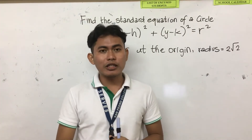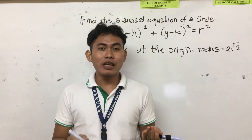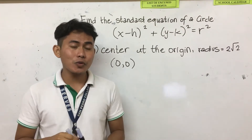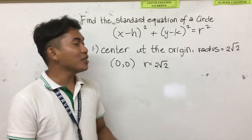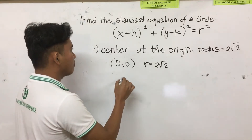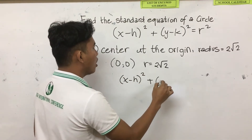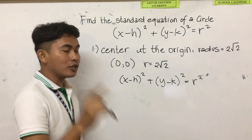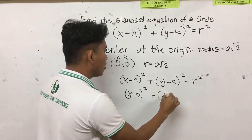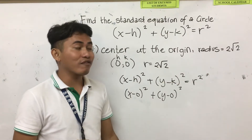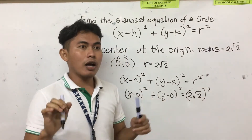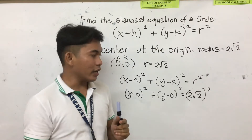When we say the center is located at the origin, what is the coordinate? Of course, the coordinate of the center at the origin is (0, 0). Then our radius is 2 square root of 2, so r is equal to 2 square root of 2. After this, you are going to substitute these values into the standard equation. So you have x minus h squared plus y minus k squared is equal to r squared. Substitute — this is your h and this is your k. So you have x minus 0 squared plus y minus 0 squared, then your r is 2 square root of 2, so you have (2 square root of 2) squared.